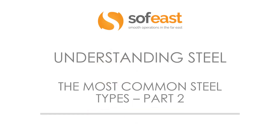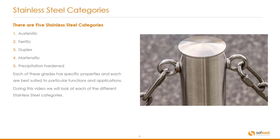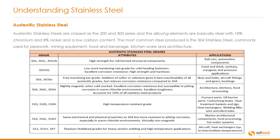Welcome to part two of the Steel Series: Understanding Steel, where we cover the most common steels. In part two we're going to be covering stainless steel. There are five stainless steel categories: austenitic, ferritic, duplex, martensitic, and precipitation hardened. Each of these grades has specific properties and each are best suited to particular functions and applications. During this video we will look at each of the different stainless steel categories.